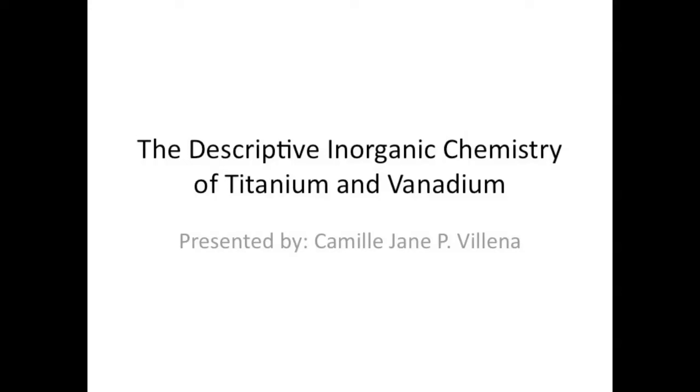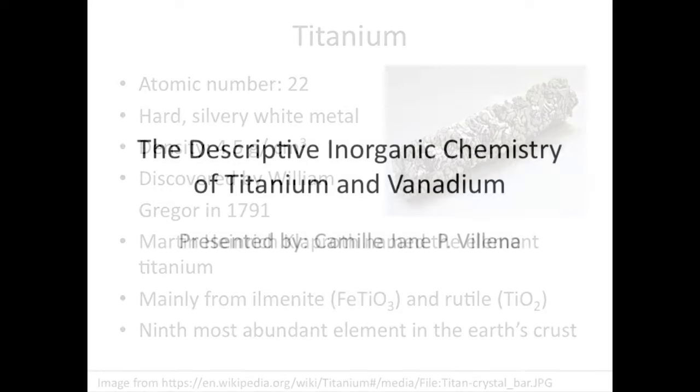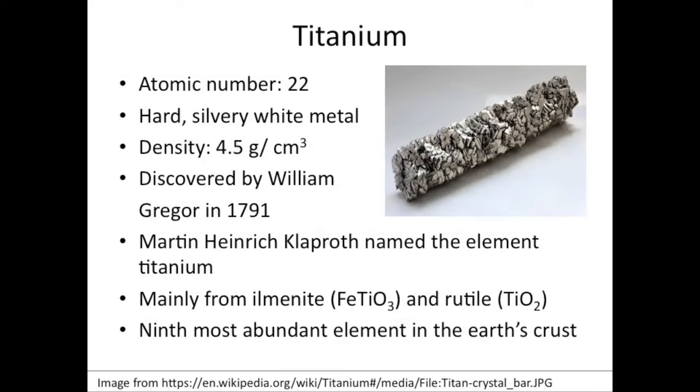This presentation discusses the descriptive inorganic chemistry of titanium and vanadium. Titanium has an atomic number of 22. It appears as a hard, silvery white metal and has the lowest density among the transition metals with a density of only 4.5 grams per cubic centimeter.